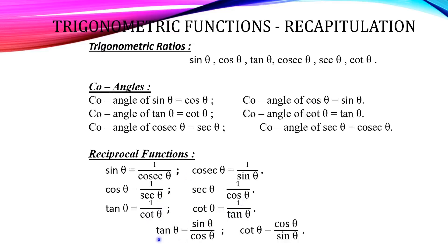Next, these are already known formulas. Tan θ = sin θ / cos θ, and cot θ (the reciprocal of tan θ) = cos θ / sin θ. These are the basic trigonometric formulae.